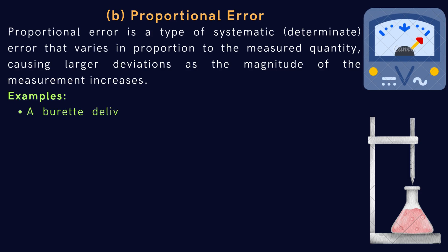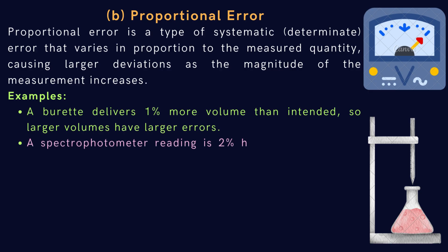Examples: a burette delivers 1% more volume than intended, so larger volumes have larger errors. A spectrophotometer reading is 2% higher than the true absorbance, increasing with concentration. A voltmeter gives readings 1% higher for higher voltages.